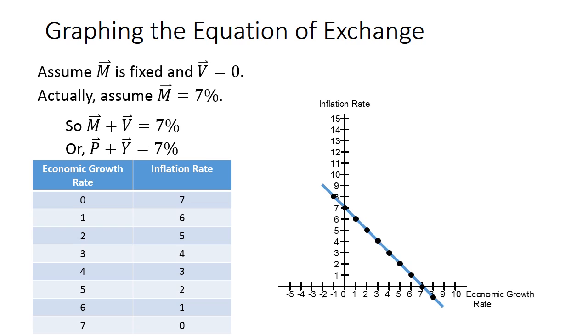If we connect the dots, we get a function that shows a negative relationship between economic growth and inflation for any given rate of spending growth. In this case, 7%.